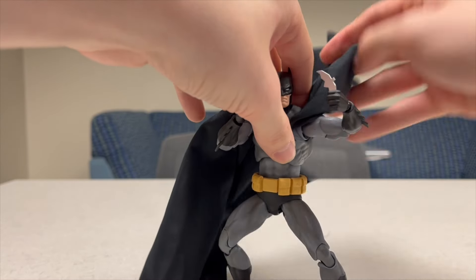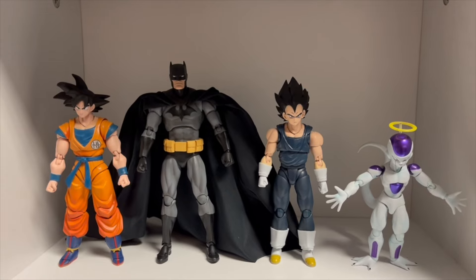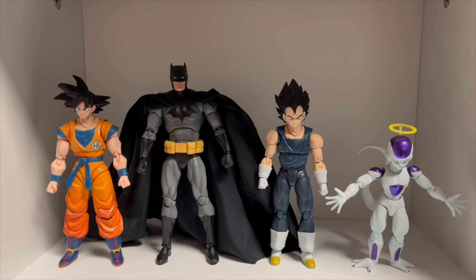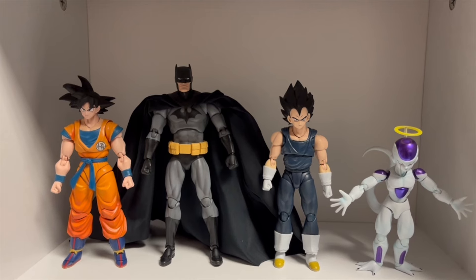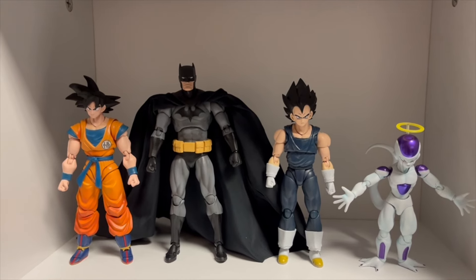All right, so here's some size comparisons with Batman and some other action figure lines. On the left, we have superhero Goku, and on the right, we have superhero Vegeta and Frieza from the SH Figuarts line. Then here he is next to Naruto, Sasuke, and Kakashi, also by SH Figuarts.